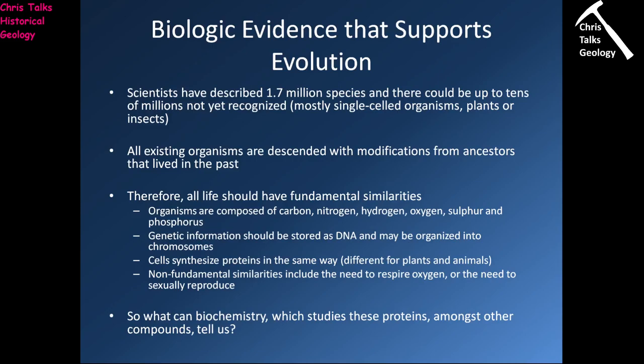Today scientists have described approximately 1.7 million species and there could be up to tens of millions which we've not yet recognised. Now, of these unrecognised species the vast majority are going to be organisms which are more easily overlooked — things like single-celled organisms, plants and insects. All existing organisms are descended with modifications from ancestors that lived in the past, meaning at the most basic level all life on Earth is related to one another.